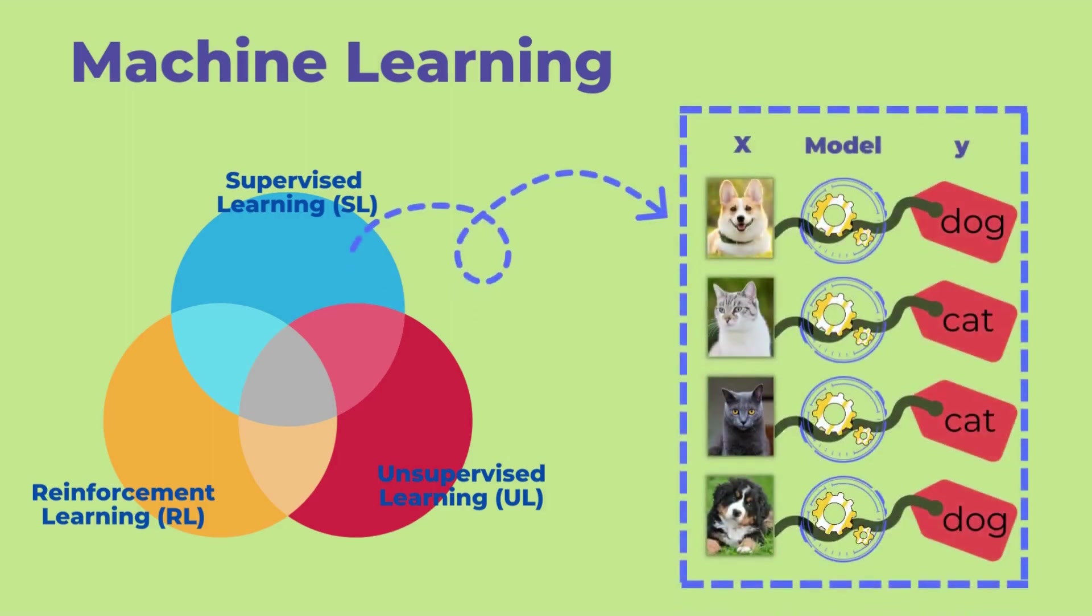Supervised learning is the most widely used and fundamental of these three fields. It involves creating a model that takes an input value X and outputs a value Y. The Y value is the correct label provided by humans to the machine. The machine learns to output the correct label Y given an input value X. Since humans provide the correct labels, this is called supervised learning. We will examine how machines learn using an example of supervised learning.